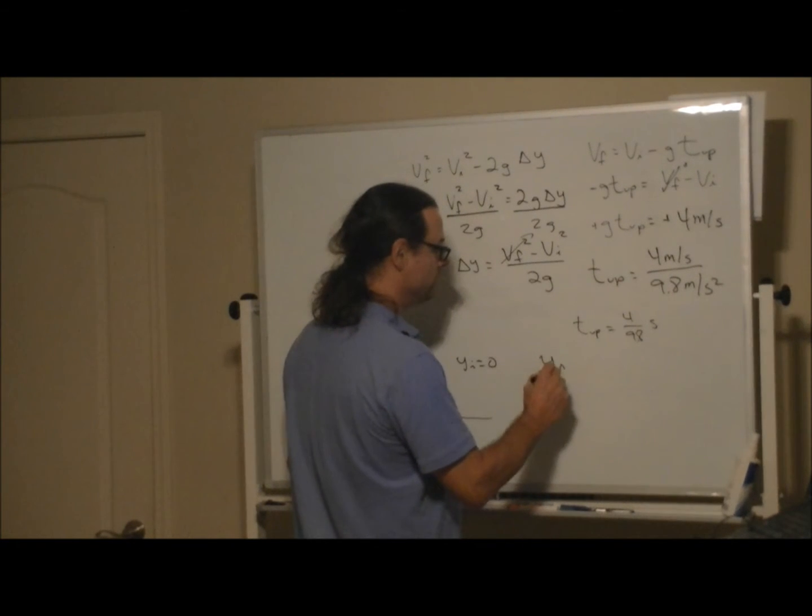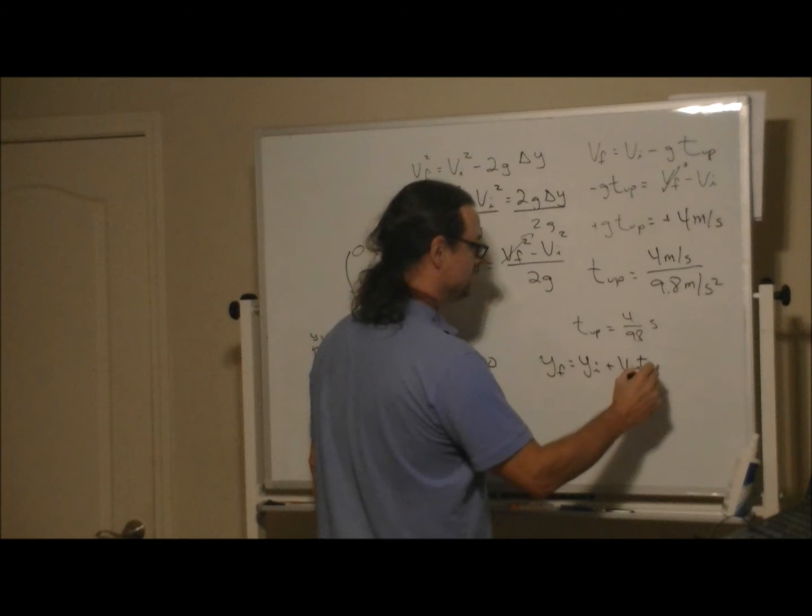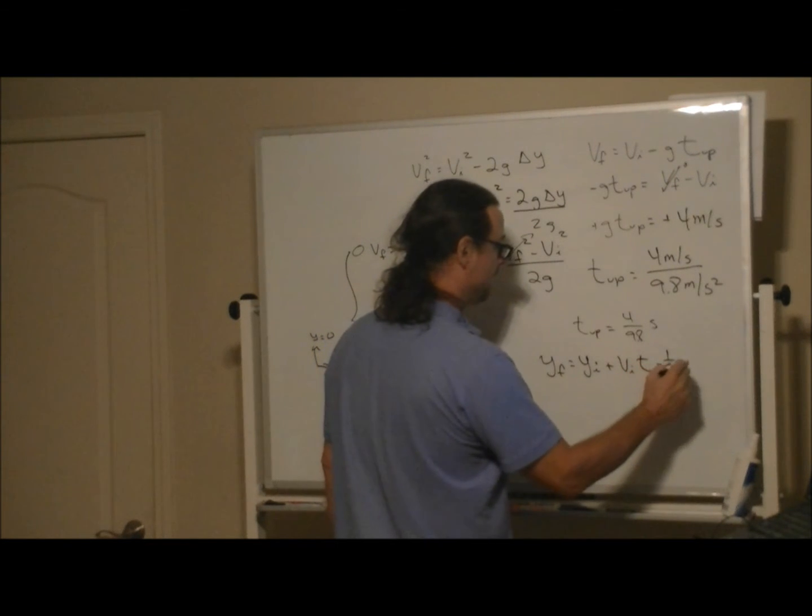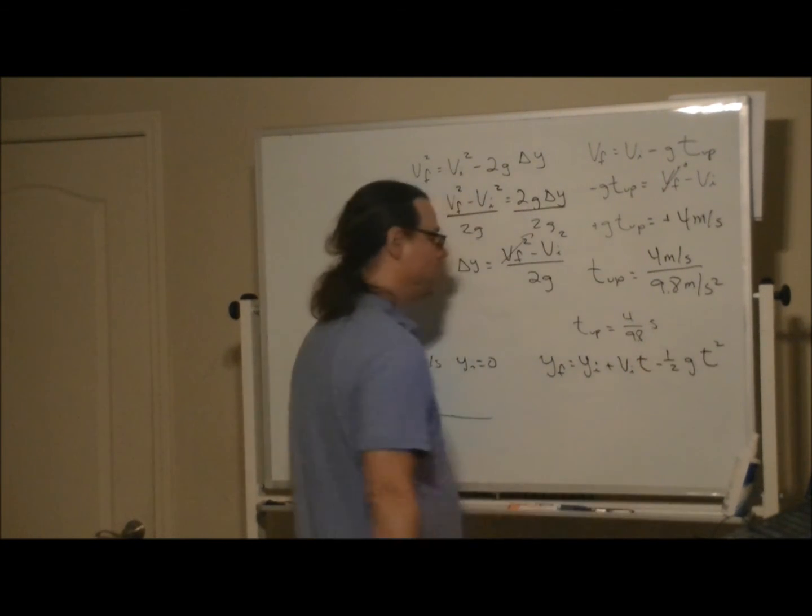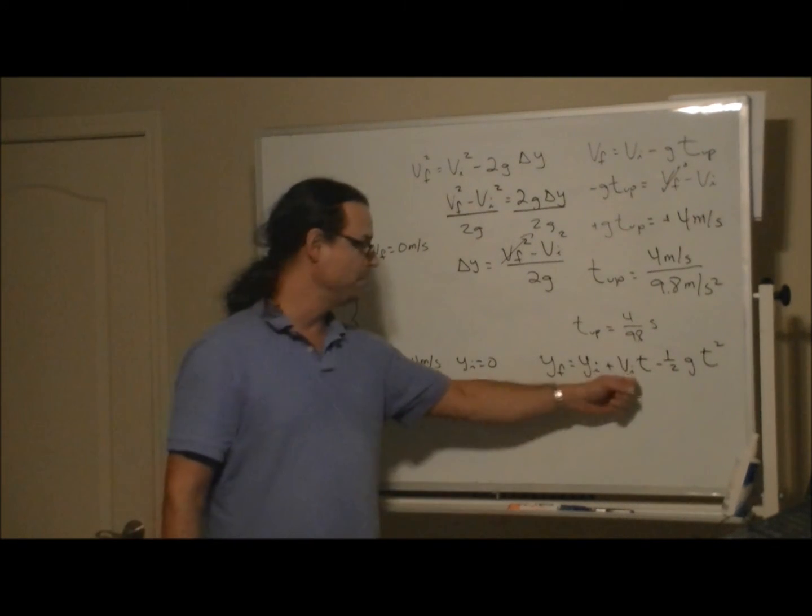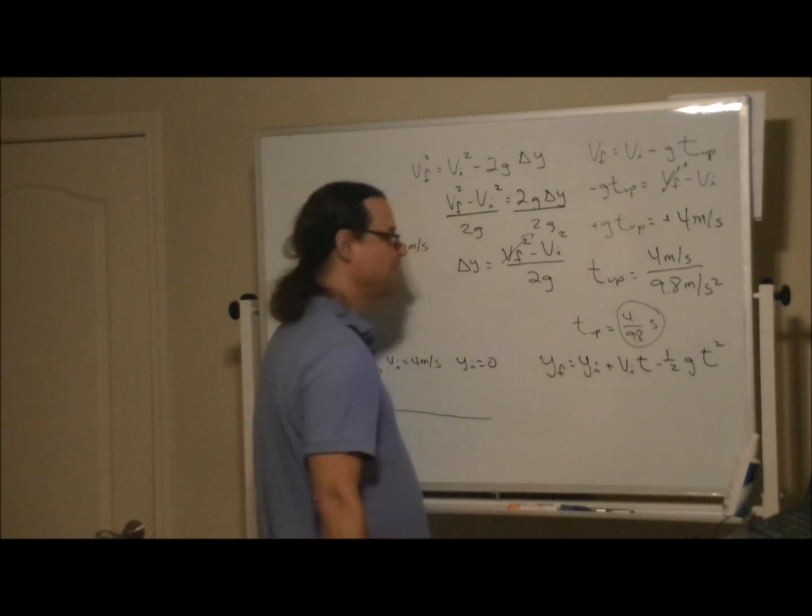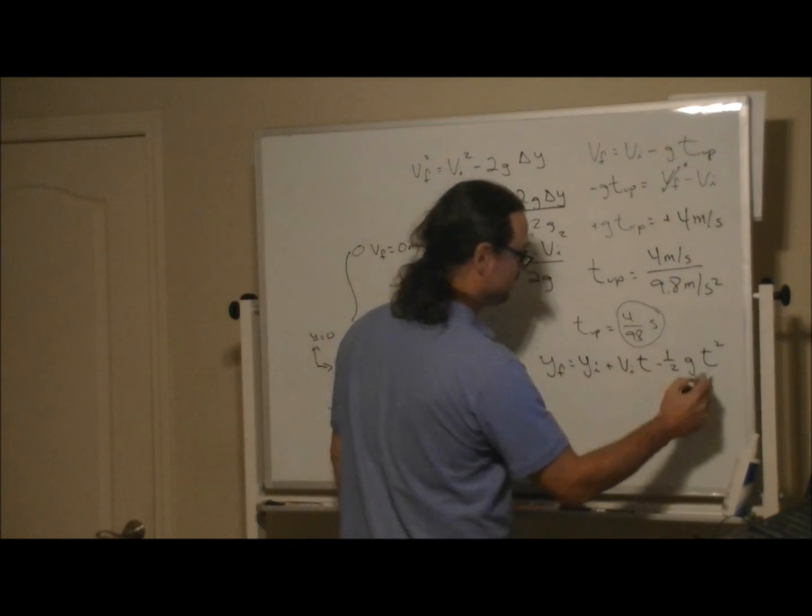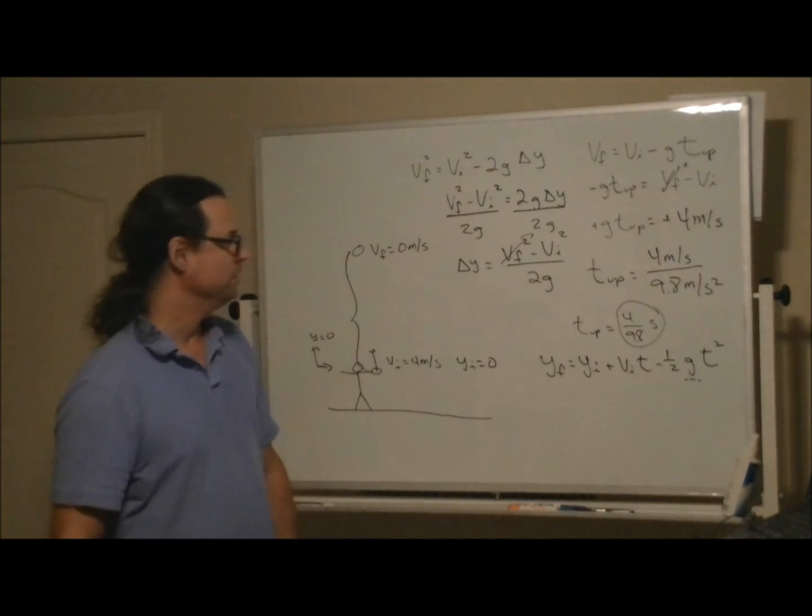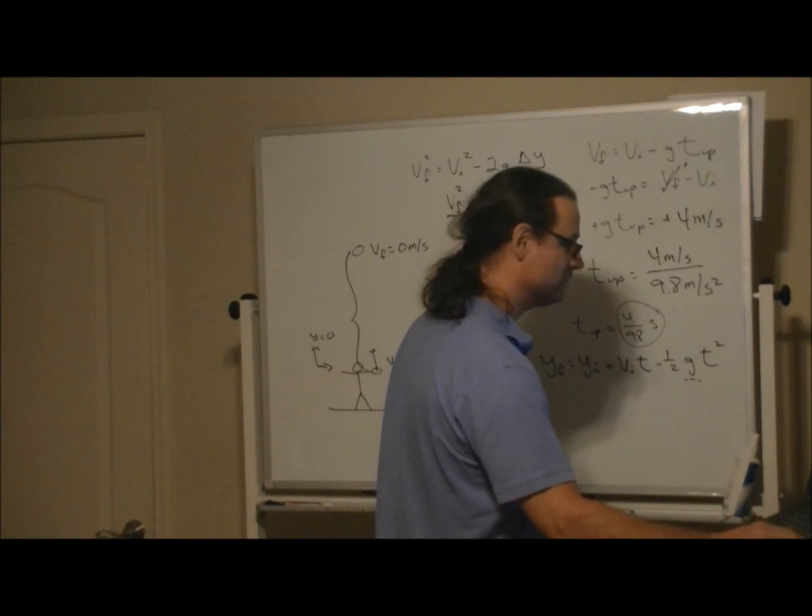By using the kinematic equation for the position: y final equals y initial plus v initial times the time minus one-half g t squared. We know y initial is zero, v initial is 4 meters per second, t up is whatever this fraction turns out to be, and g is 9.8 meters per second squared. So I'll leave plugging in the numbers there as an exercise for the diligent student, so we can get to the next one.